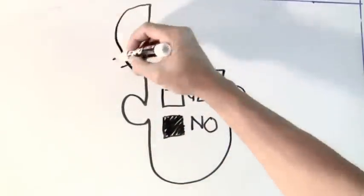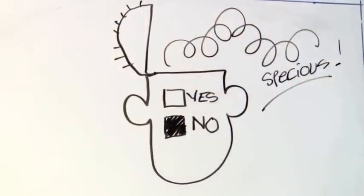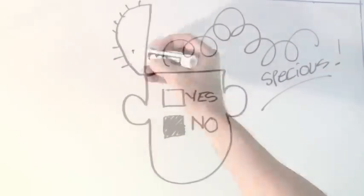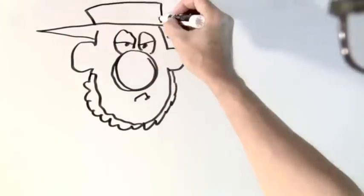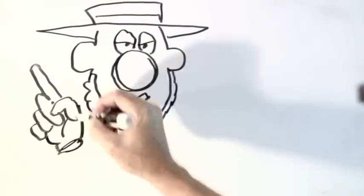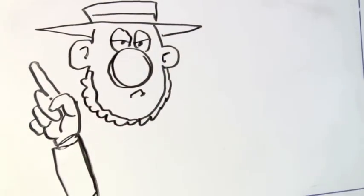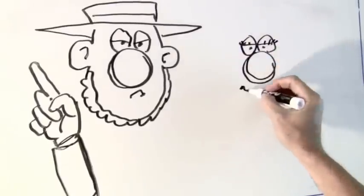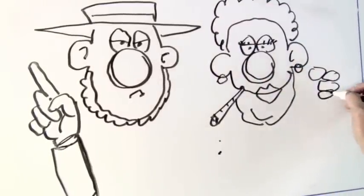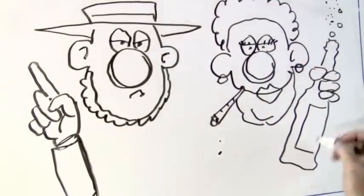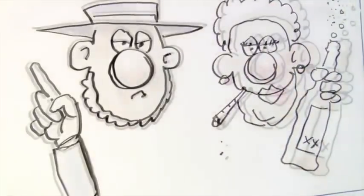For every person who claims the secret to their 100th birthday lies in a healthy balanced diet, unprocessed buttermilk and castor oil, there's another centenarian like Helen Reichert who swears by booze, cigarettes, hamburgers, and fine New York restaurants.